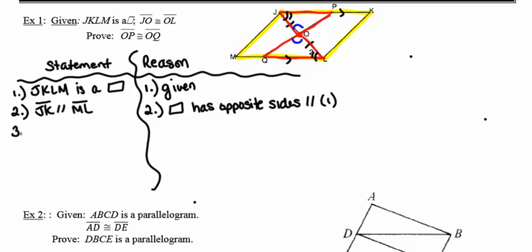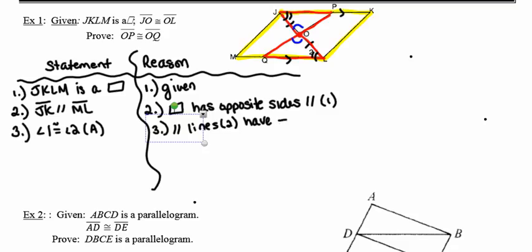I'll start by stating that JKLM is a parallelogram — given. Because it's a parallelogram, side JK must be parallel to side ML, since a parallelogram has opposite sides that are parallel, citing statement 1. Because those two sides are parallel, angles 1 and 2 must be congruent to each other, as parallel lines cut by a transversal have congruent alternate interior angles.